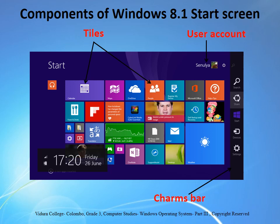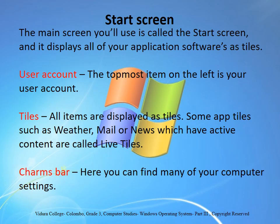So what are the components of the Windows start screen? Those are user account, tiles, and charms bar. User account — the topmost item on the left is your user account. Tiles — all items are displayed as tiles. Some app tiles such as weather, mail, or news which have active content are called live tiles. Charms bar — here you can find many of your computer's settings.